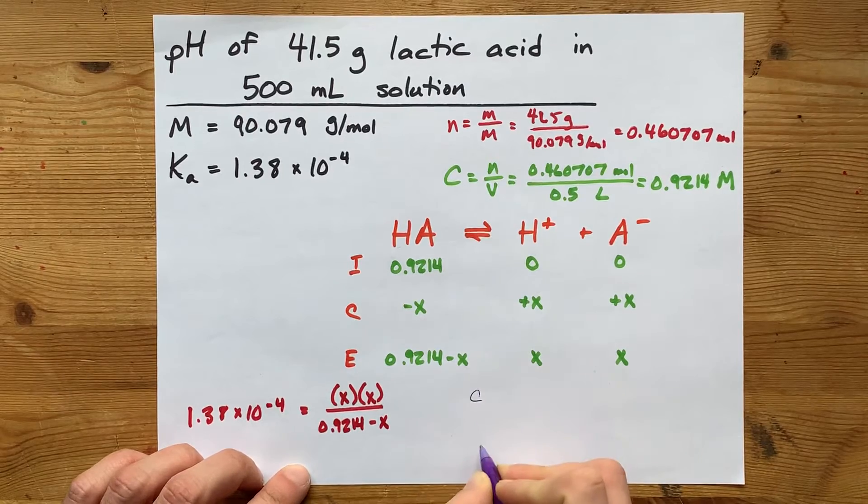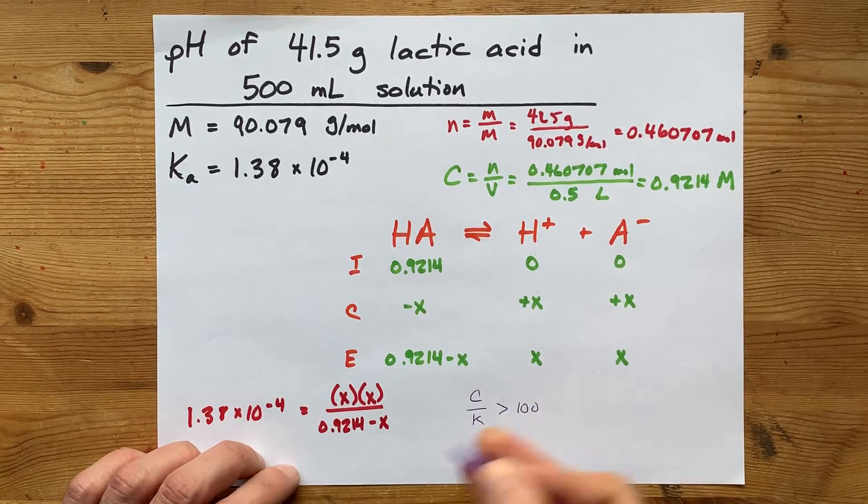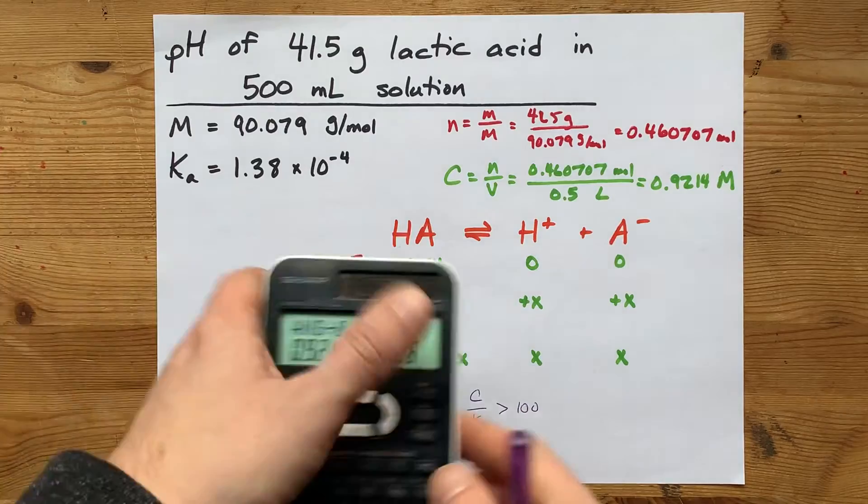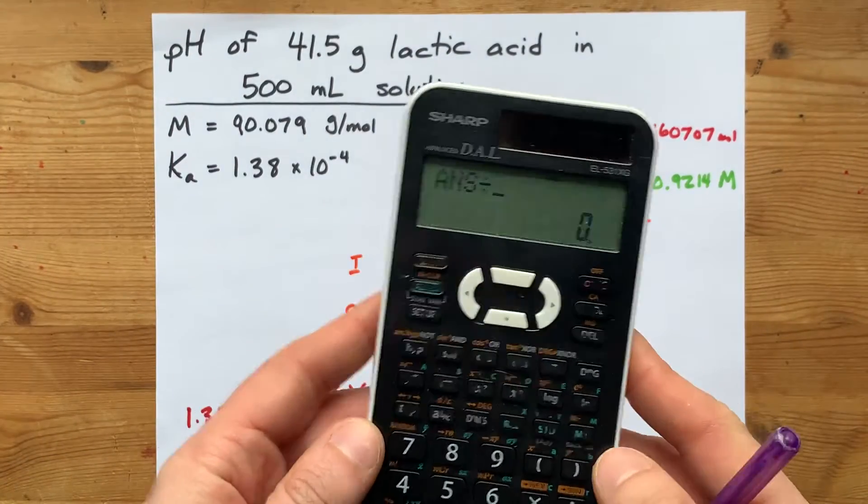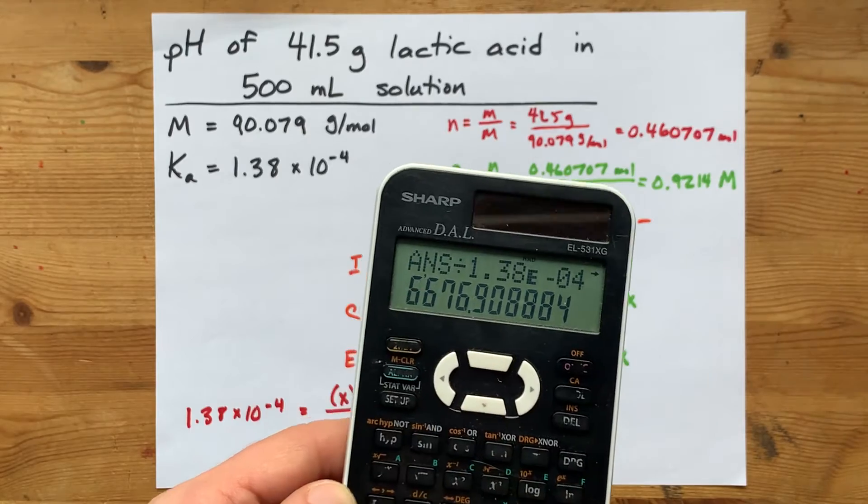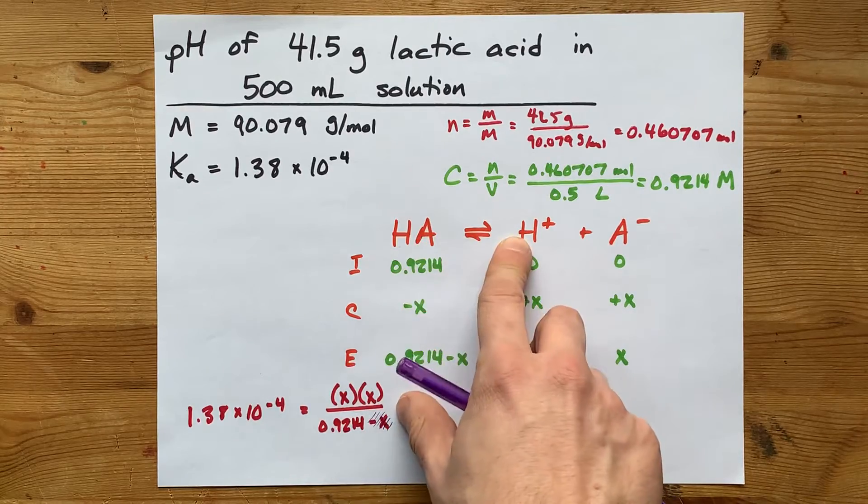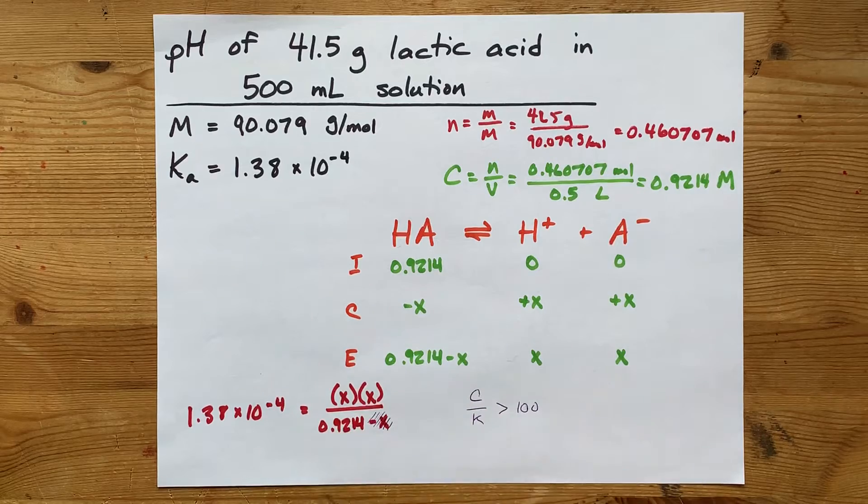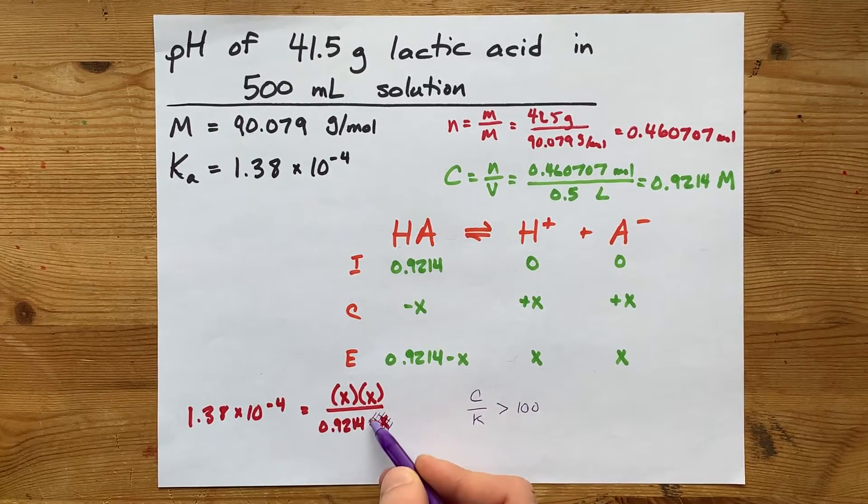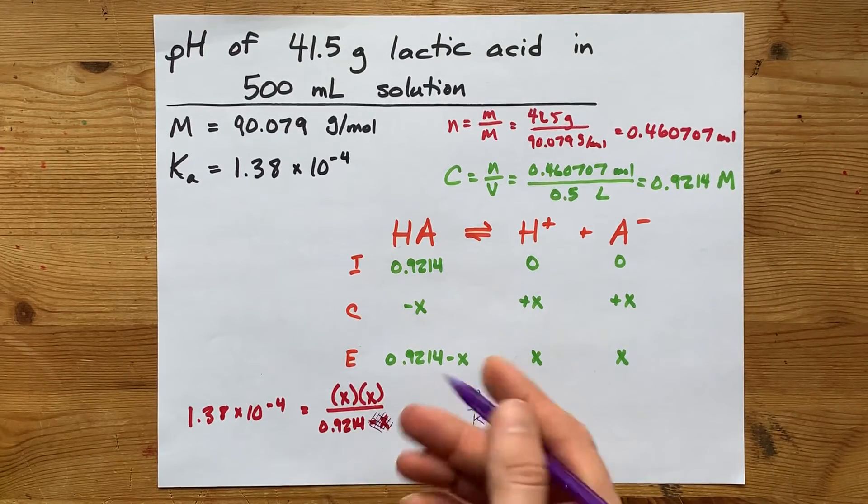If the concentration you were given, 0.9214, divided by K, is more than 100, most teachers will let you cross out this minus X here. Just to be clear, that is going to happen here. My concentration divided by 1.38 times 10 to the power of negative 4 gives me 6,600. That's way more than 100, which means that the amount of HA disappearing is hardly anything compared to the initial concentration. It's like when a millionaire drops a dollar, you're still about a millionaire. And so you don't have to be pedantic about keeping the minus X here. That makes this equation much easier to solve.